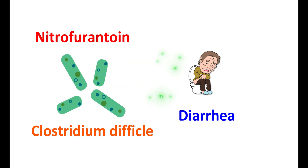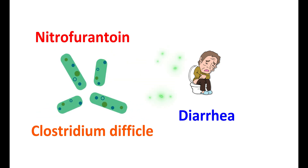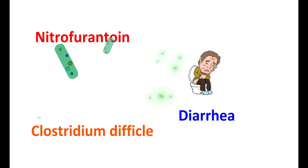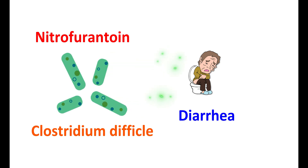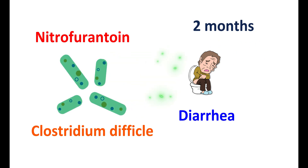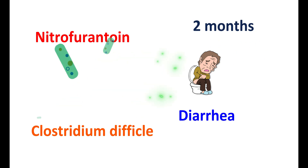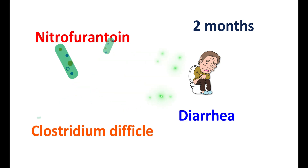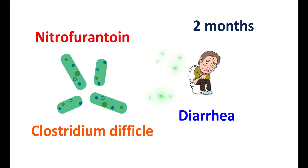In a few cases, it can also produce a hypertoxin which is fatal and can produce damage to the colon. Therefore, in people with any previous history of antibiotic-induced diarrhea, careful monitoring should be done for the first two months of starting Nitrofurantoin therapy. Fluid and electrolyte management should be done, and protein supplementation can also minimize the risk of Clostridium difficile-associated diarrhea.